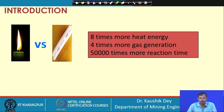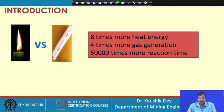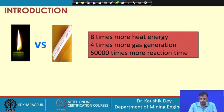Why is the explosive dangerous? Because the candle is also taking 50,000 times more time for this reaction. That means 8 times more heat energy is released from the candle, but that heat energy is released over 50,000 times more duration. The instantaneous release of heat energy is very insignificant in case of the candle compared to the explosive. The explosive is dangerous because its energy is released almost instantaneously - the reaction time is very very less and the high energy is released almost instantaneously.